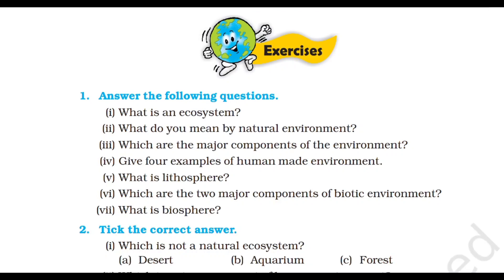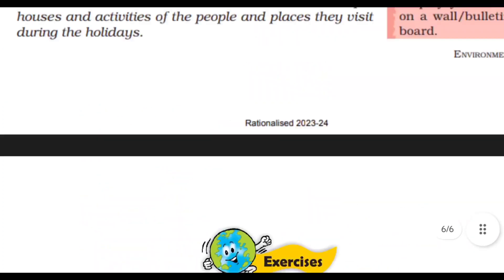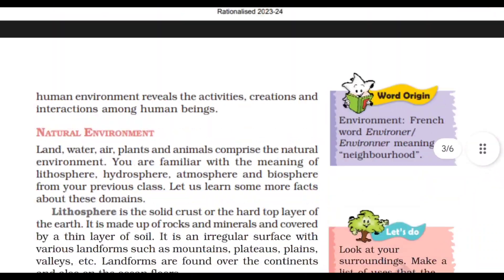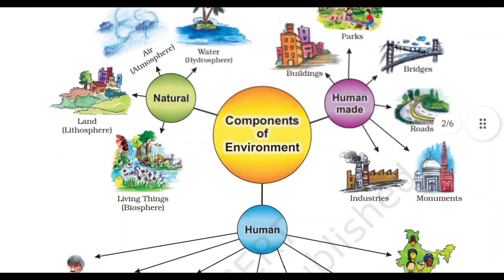Next question: What are the major components of the environment? There are three major components of the environment: natural, human, and human-made. If it is a three-mark question, you can answer that the components of environment are natural components, human components, and human-made components, with examples. For natural components, you can write atmosphere, hydrosphere, lithosphere, biosphere.